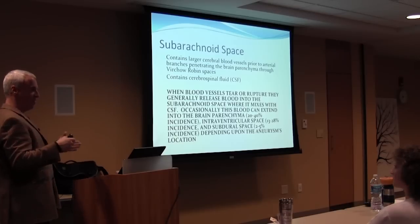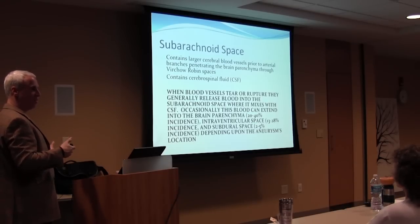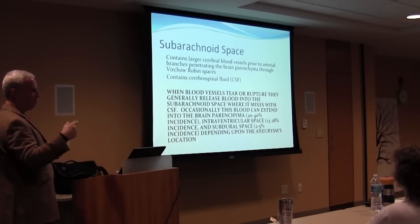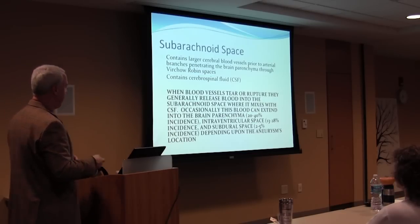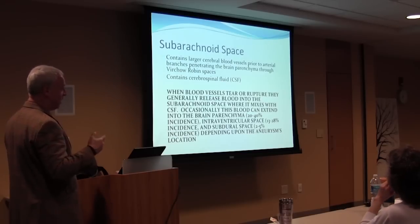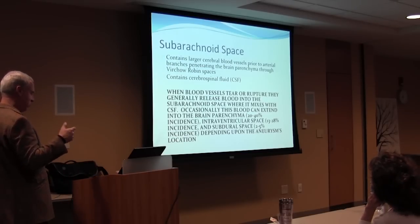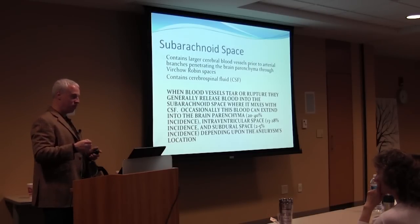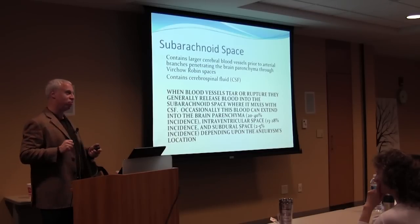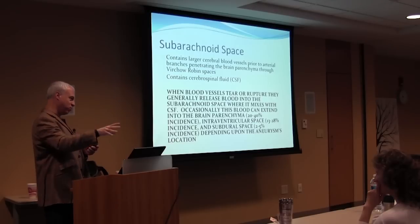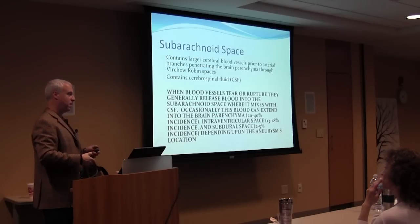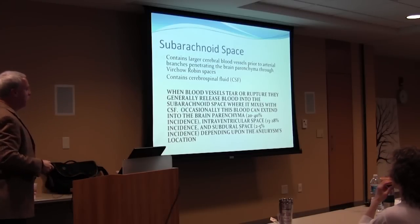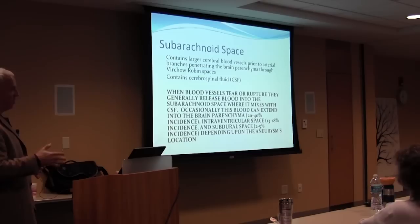Blood can also dissect into the brain and form a clot, or extend even further into the ventricles — the fluid-filled spaces of the brain. Blood can wash into the ventricles in up to 30 percent of cases. It can even go into the subdural space: an aneurysm can rupture through the brain, through the arachnoid, and into the subdural space. But in general, most aneurysms rupture just into the subarachnoid space, and then you might see blood in the ventricles as it mixes with the spinal fluid.